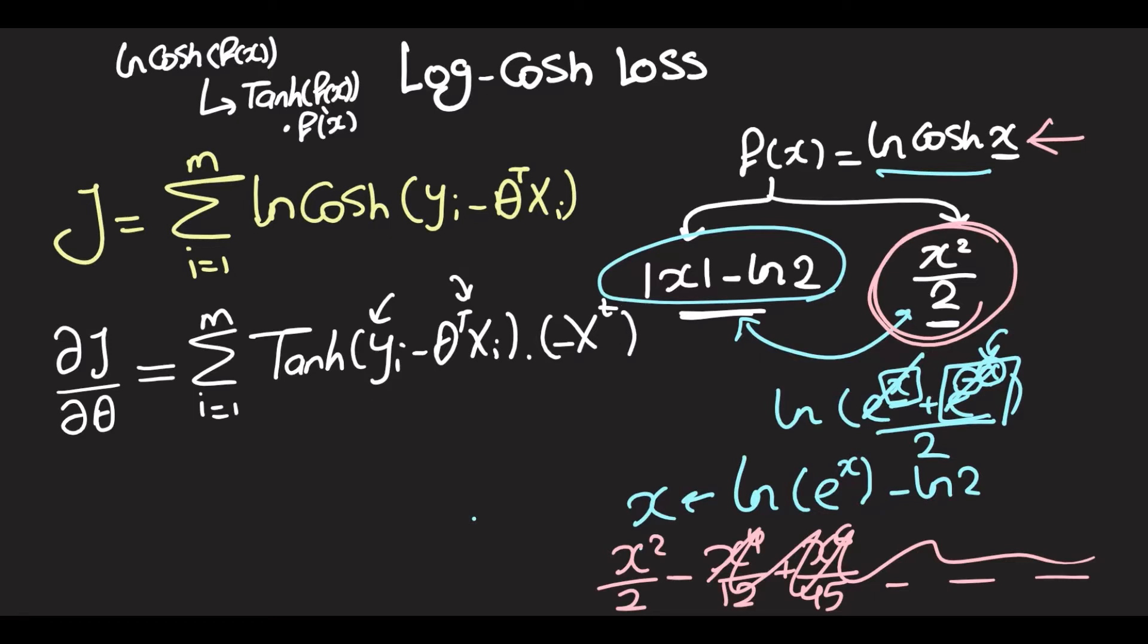The way that this outclasses both least squares and least absolute deviations is by solving their problems. For least squares, you no longer have to be worried about outliers, because if the offset is large enough, then you're just doing least absolute deviations. And you no longer have that problem of getting infinite solutions or having multiple minimizers for your cost function. So thank you for watching.